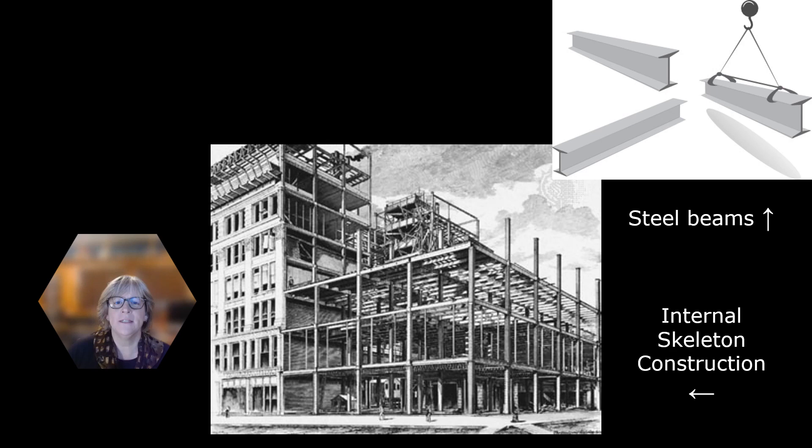The floors, walls, windows, and ceilings were suspended from the skeleton, which held all the weight. This way of building was called column-frame construction. This column-frame construction allowed for buildings to have larger windows, which allowed more daylight into the interior spaces. And with thinner walls, there was more usable floor space.